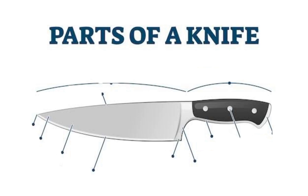Parts of a knife. First we are going to look at two main parts: blade and handle or scales.